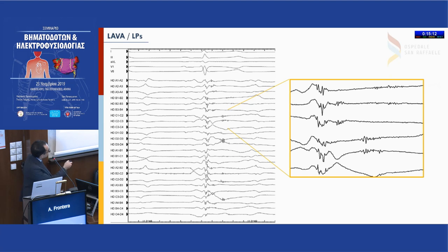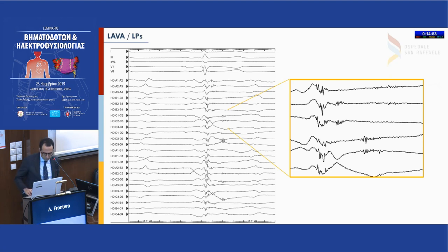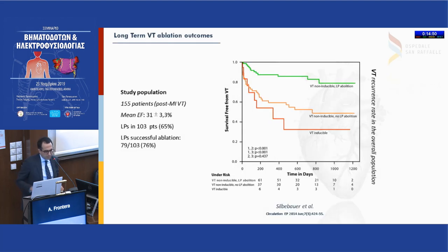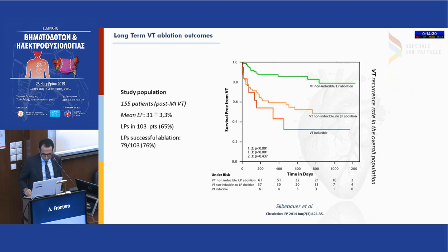The tiny signals we are looking at: first, under the QRS are the LAVA — local abnormal ventricular activity — and then there are late potentials. You see the surface ECG with the QRS, and below are the fractionated EGMs represented by LAVA, and then the very tiny late potentials. We are looking for these signals because, as you see from this Kaplan-Meier curve, patients who are non-inducible at the end of the procedure and in whom every late potential has been abolished do much better — compared to patients where VT is not inducible but late potentials were not chased. This paper is from our group published in Circulation 2014.